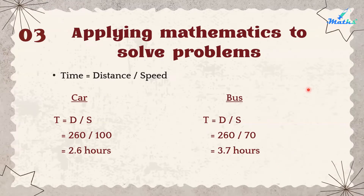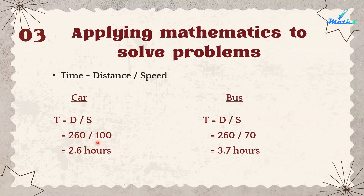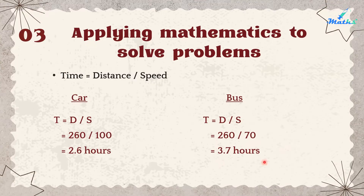Step 3 — Applying mathematics: The formula is time = distance ÷ speed. For the car: t1 = 260 ÷ 100 = 2.6 hours. For the bus: t2 = 260 ÷ 70 ≈ 3.7 hours to travel to Town A. So travelling by bus takes much longer than by car.